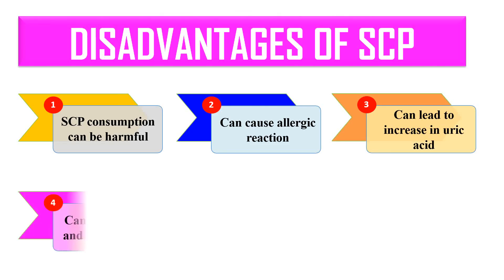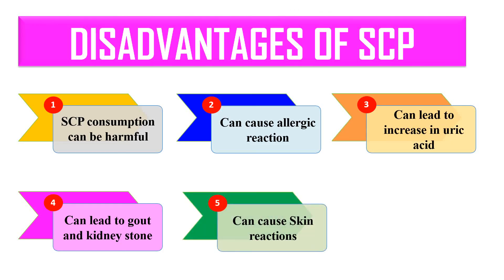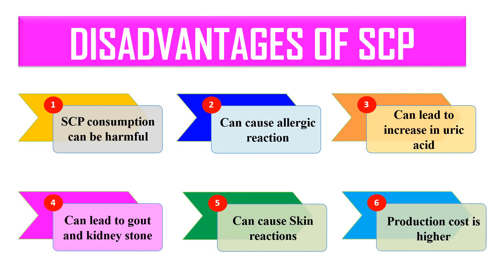Regular consumption of single cell protein can also lead to the development of gout or kidney stones. Certain skin reactions are also reported after consumption. Lastly, due to the requirement of high-end machinery, the production cost of single cell protein is also very high. These are some of the disadvantages associated with the production of single cell protein.